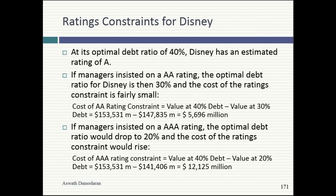Here's the cynical side: the $19 billion in value I created by going to a 40% optimal for Disney — where did it come from? I'm taking the same projects, same theme parks, same movies. Where is it coming from? Taxpayers. That is one reason why we end up with an economy where the only way value is created for shareholders is by changing capital structure. At the economy-wide level, there's no value being created — you're just moving money around.